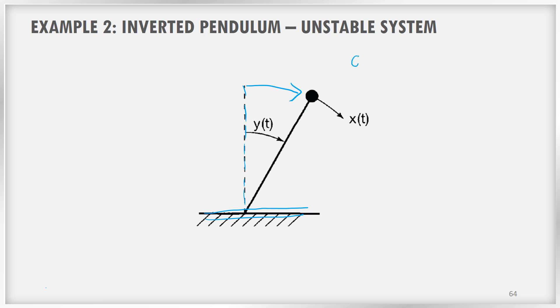If you pull it from this location, you know that even though there is an air drag, here gravity is acting in the opposite direction. And finally, this pendulum will topple down and it will become unstable. It will become unstable. It will not go back to the original position. It will topple down. This is an example of an unstable system.